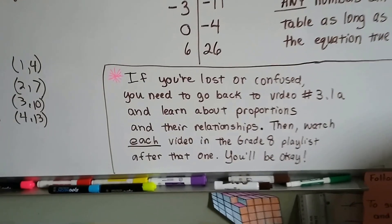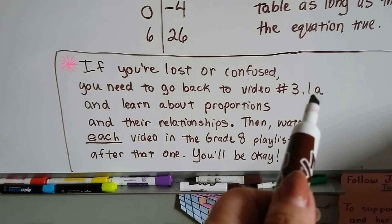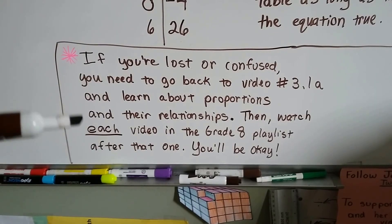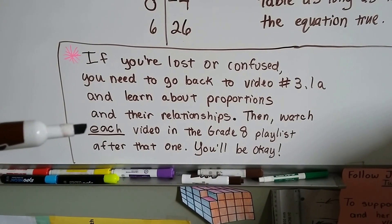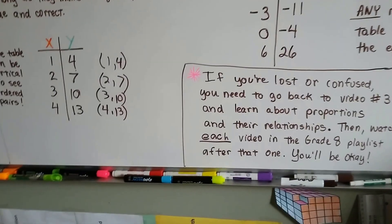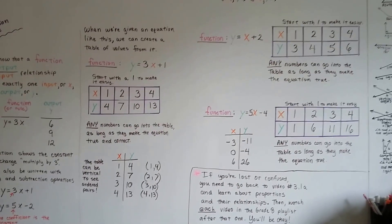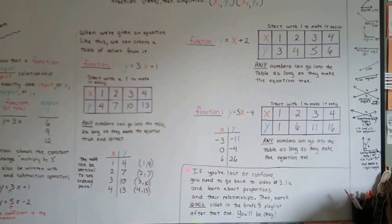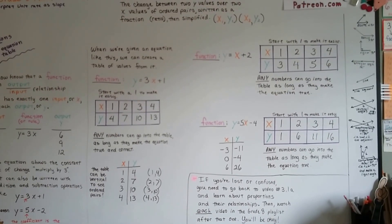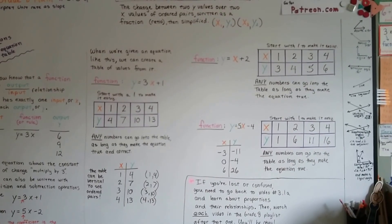Now, if you're really lost or confused, then you need to go back to video 3.1a in this playlist, in this grade 8 playlist, and learn about proportions and their relationships, and then watch each video in this grade 8 playlist after that one. And then you'll be okay. You can't walk into the middle of a movie at a movie theater and then get upset that you don't know what's going on. So my advice would be, if you're really confused or even semi-confused, go back to 3.1a. Start watching those videos and catch up. Fill in all the empty holes that you missed.